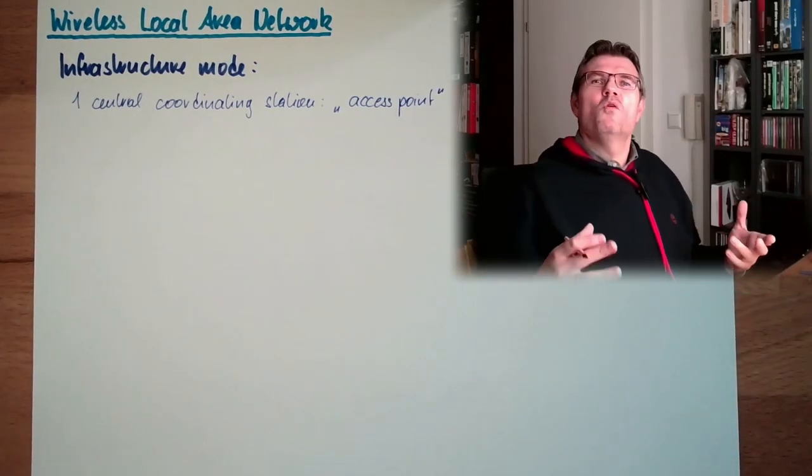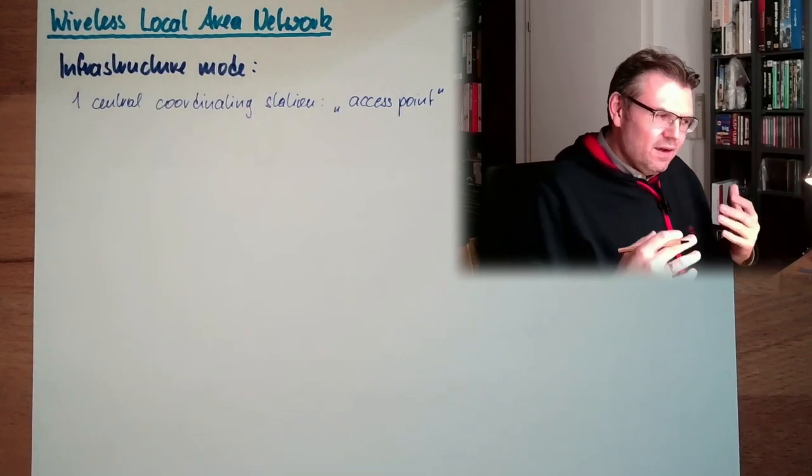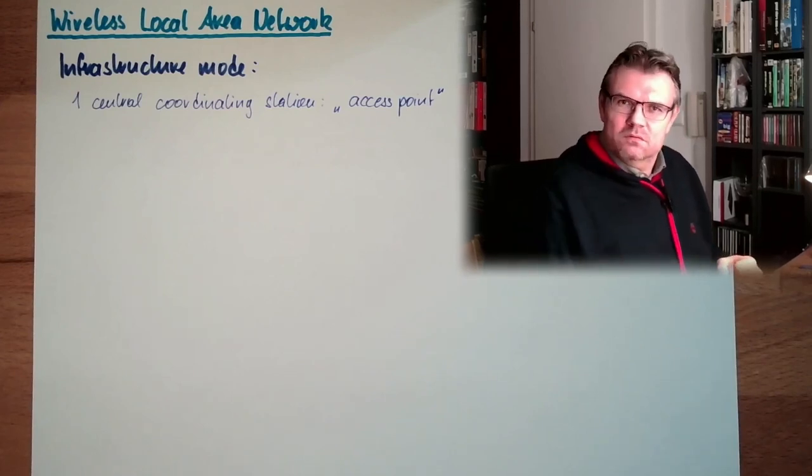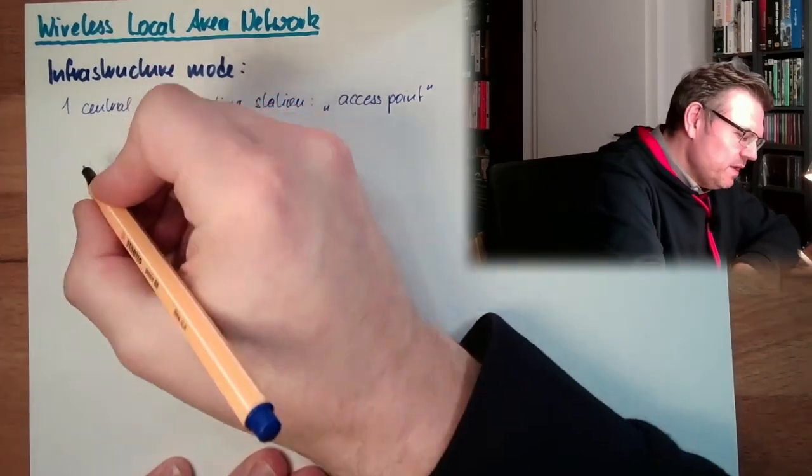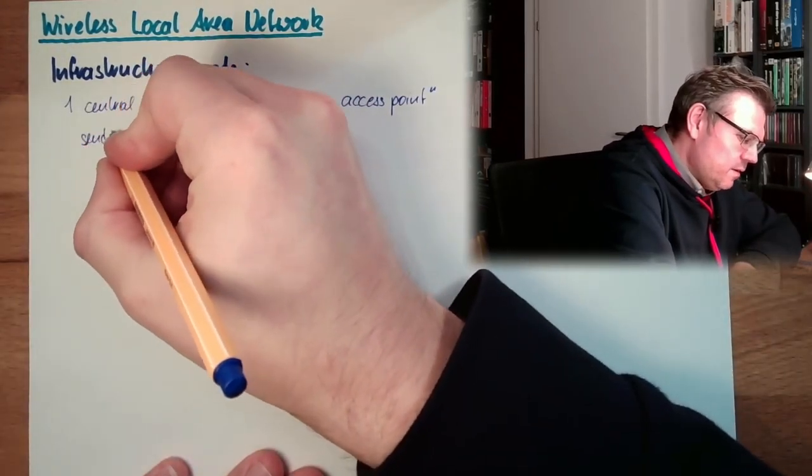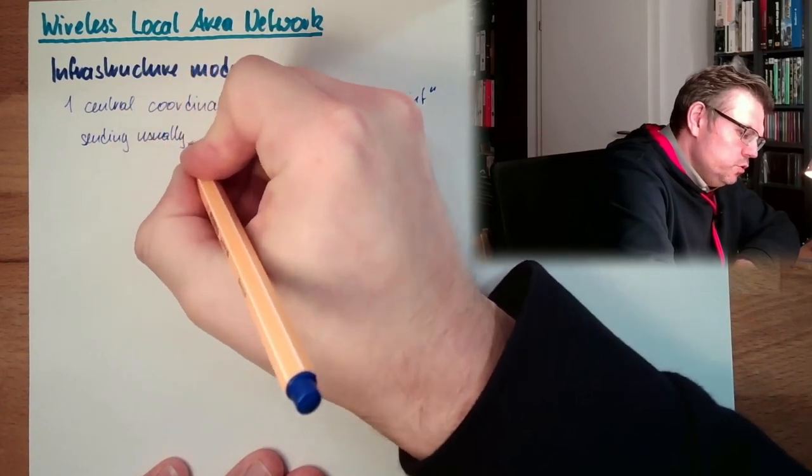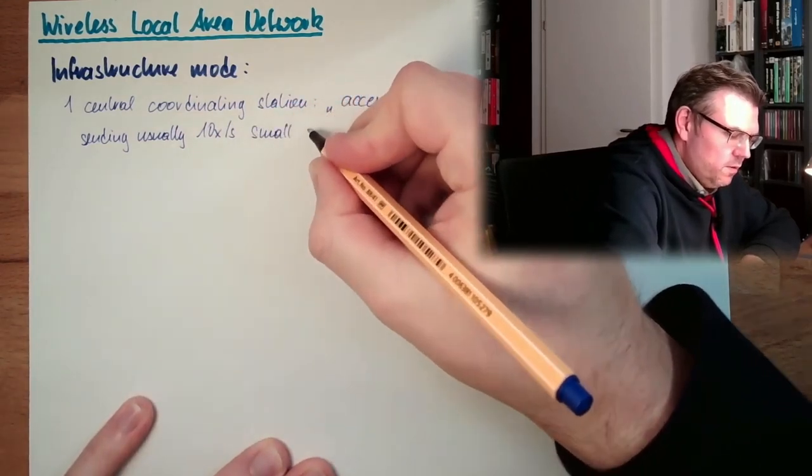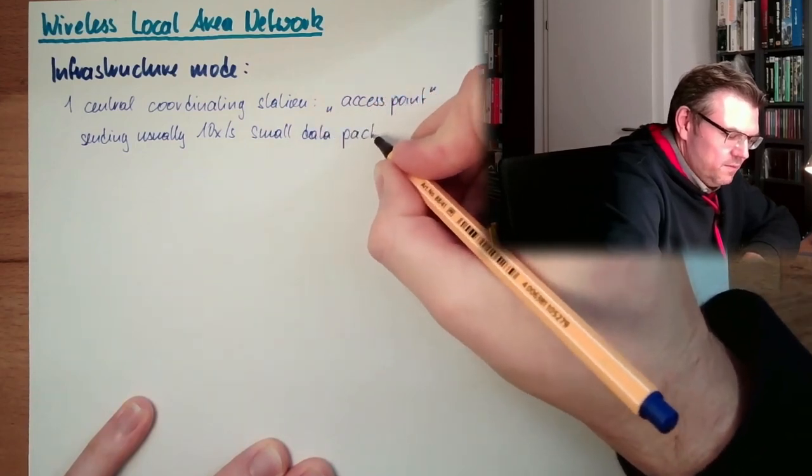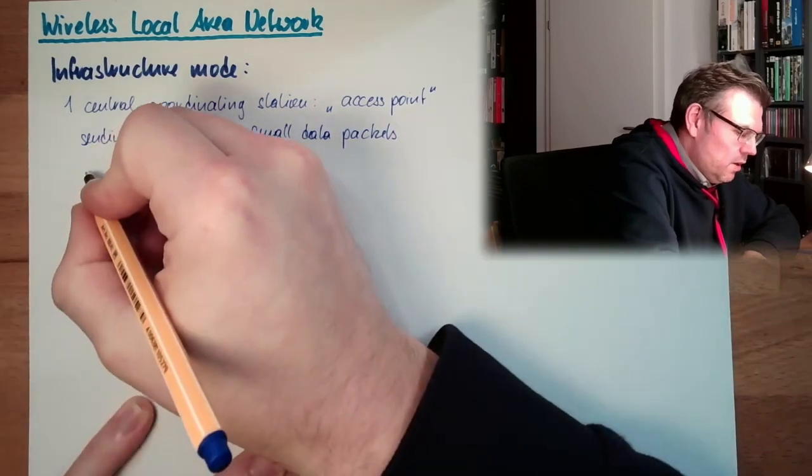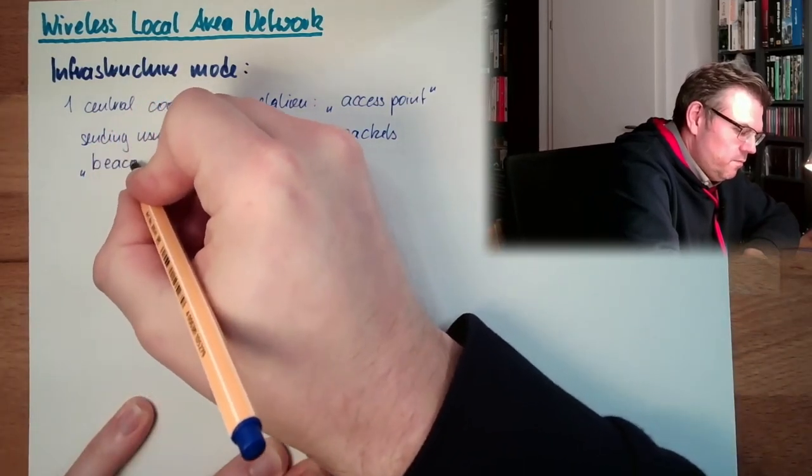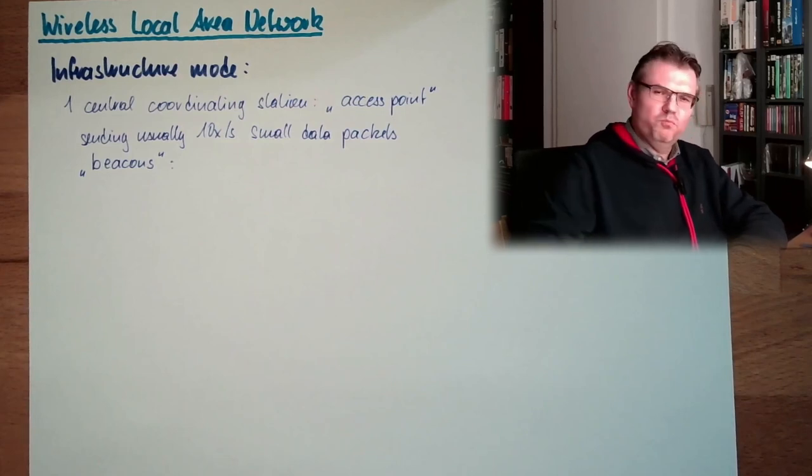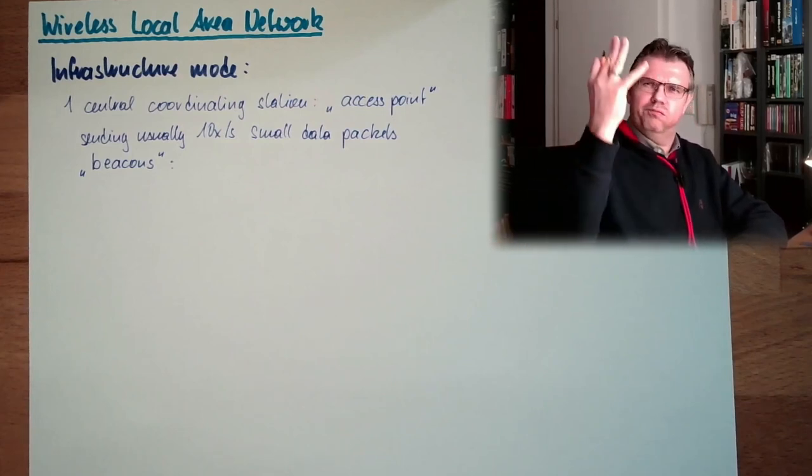So this access point is the point where all the other things, all the other clients, all the other stations, connect to. The access point is always sending, usually 10 times per second, small data packets. Those things are called beacons. Beacon in Leuchtfeuer in German. 10 times a second.